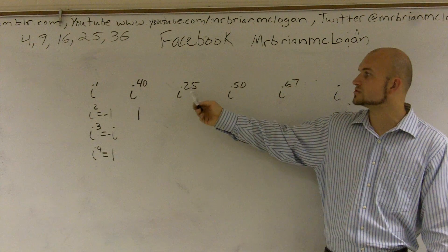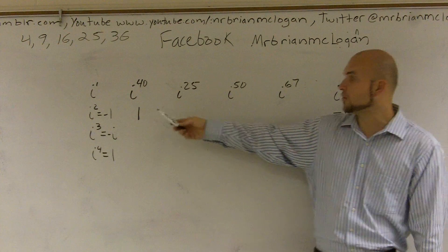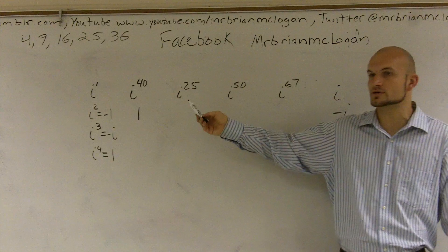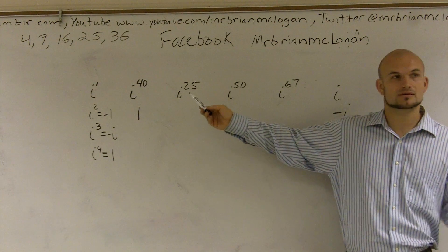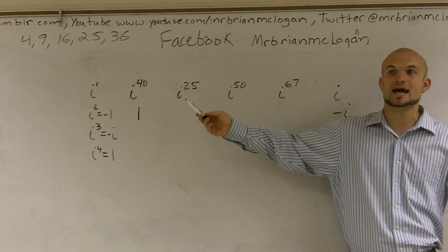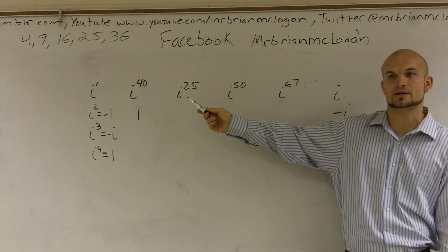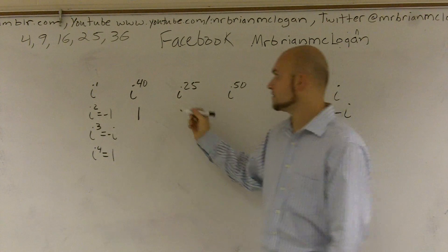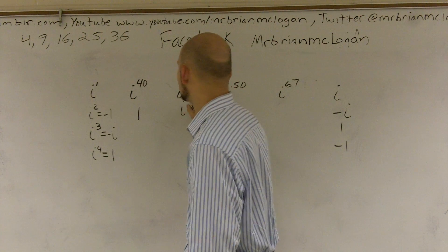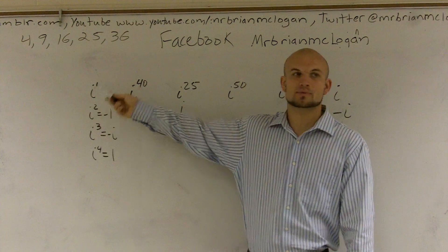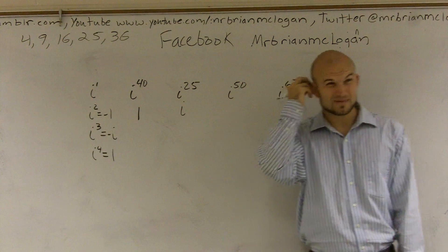If I looked at i to the 25th, how many times does four, four options, how many times does that go into 25? Six. Six times, right? But it just keeps on repeating that six times. Then after that six times, what is my remainder? One. So therefore, this is going to be, we can represent this one as i. Since I have a remainder of one, I represent it as i. Does that make sense?